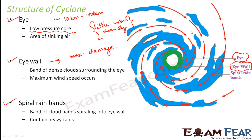Finally, there are the spiral rain bands — the blue-colored cloud structures shown here. These can extend up to thousands of kilometers from the eye, defining the overall extent of the cyclone. They are oriented in the same horizontal direction and do contain heavy rains, but they are not as intense as the eye wall. Gradually, as you move away from the core, wind speed reduces and rainfall is less heavy, so the power of destruction decreases with distance from the core.